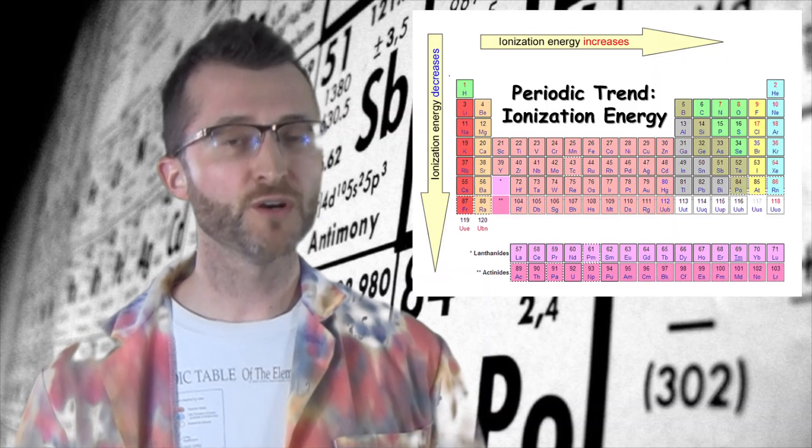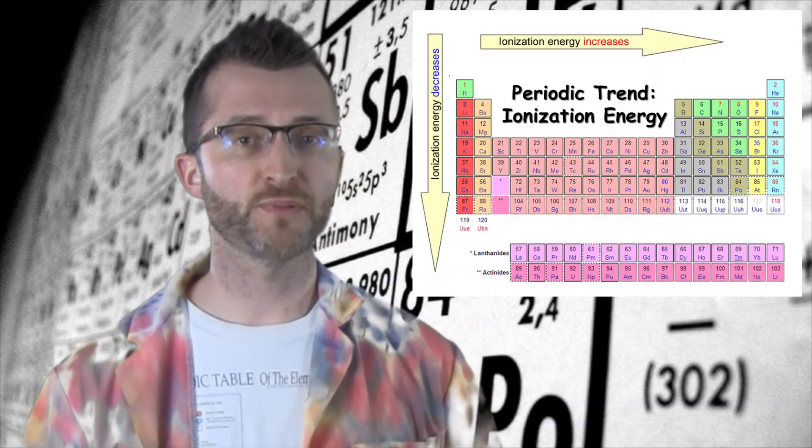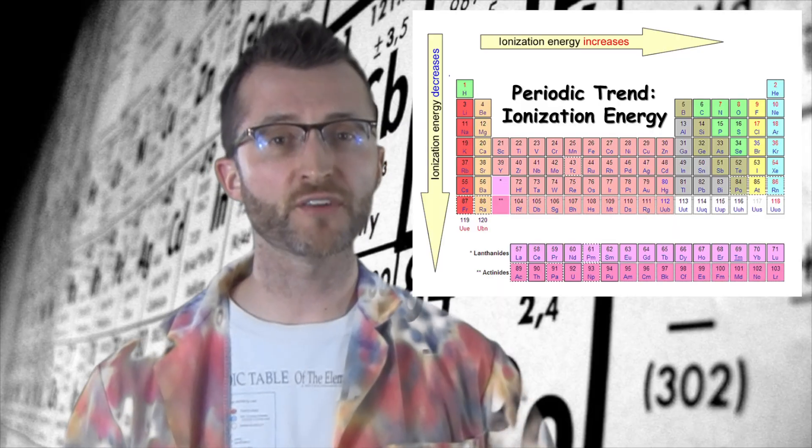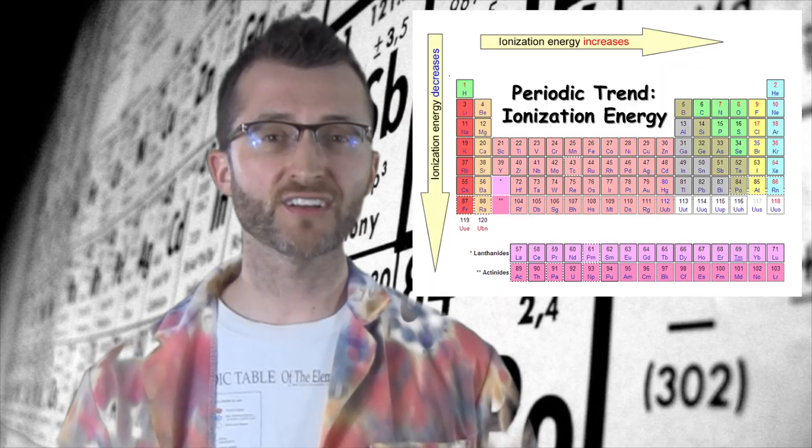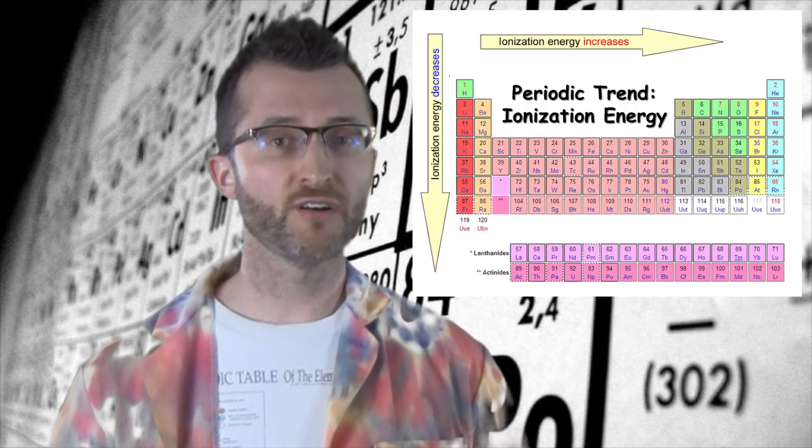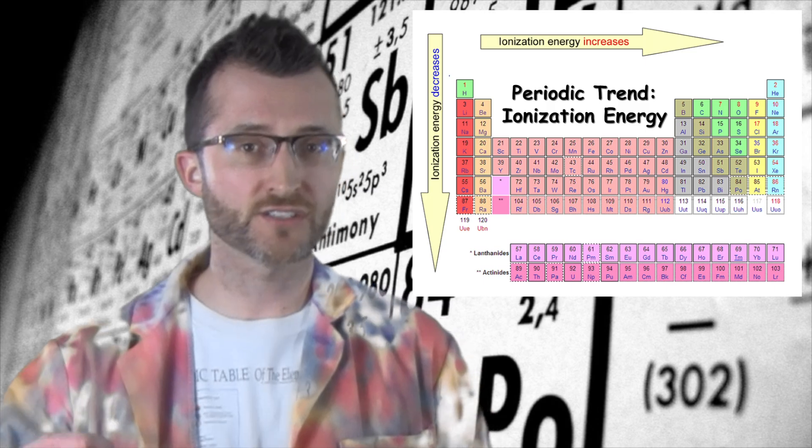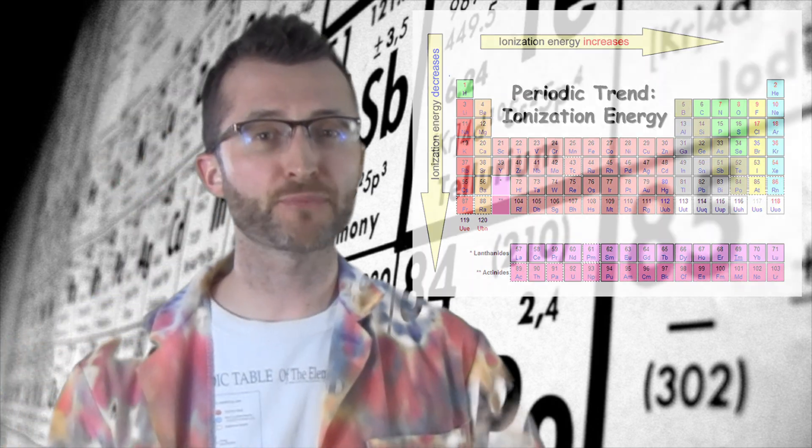Down a group, we have more energy levels, as Mr. Fu already explained. And so those electrons that are farther away from the nucleus, they are weakly attracted to the nucleus. They are a lot easier to remove. So I don't have to add as much energy to remove those electrons. I can just go, boop, and they'll pop right off.